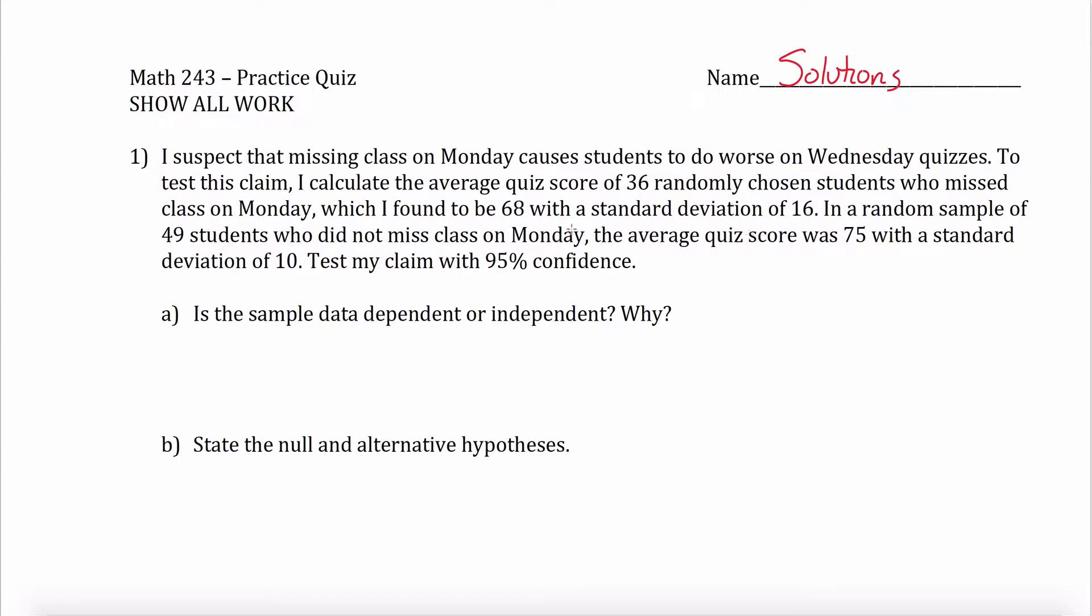In this first problem, I suspect that missing class on Monday causes students to do worse on Wednesday quizzes. Sorry, that's kind of preachy and annoying. This came from an old final. So what I did is I tested this claim by calculating the average score of 36 randomly chosen students who missed class and 49 students who did not miss class. It's not the same students. It's 36 here and 49 unrelated ones here. Because they're different students, this would be independent data here.